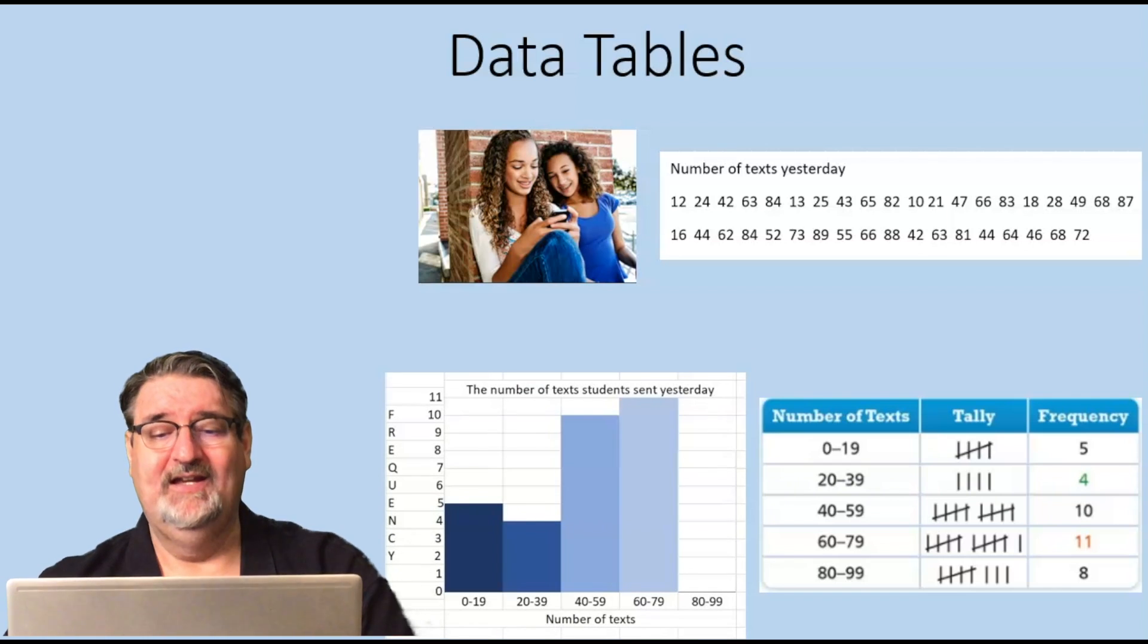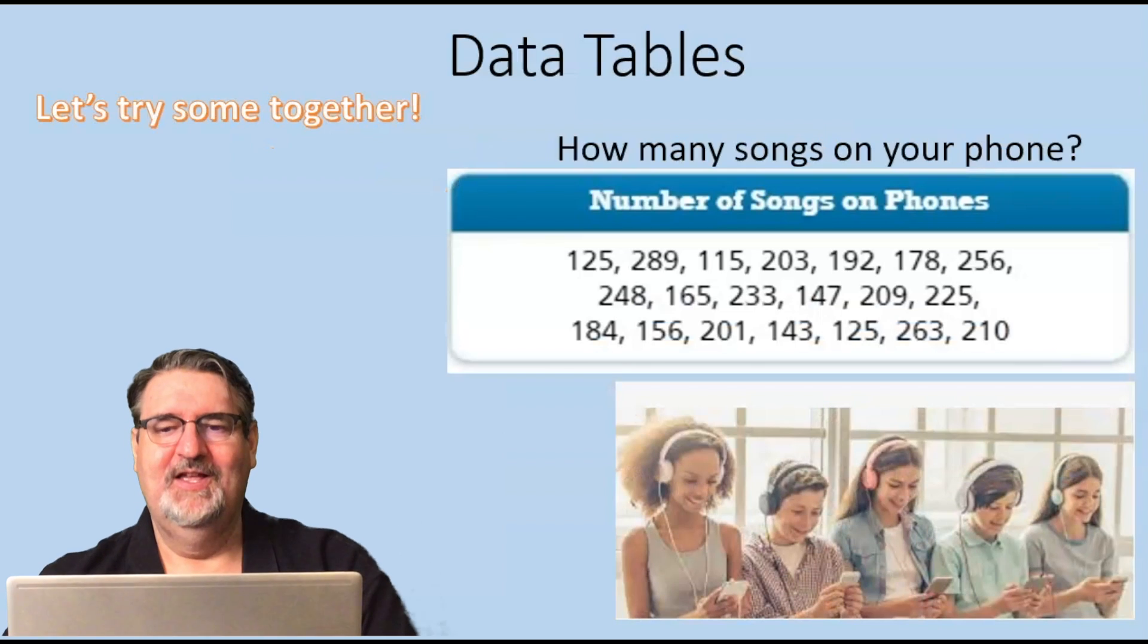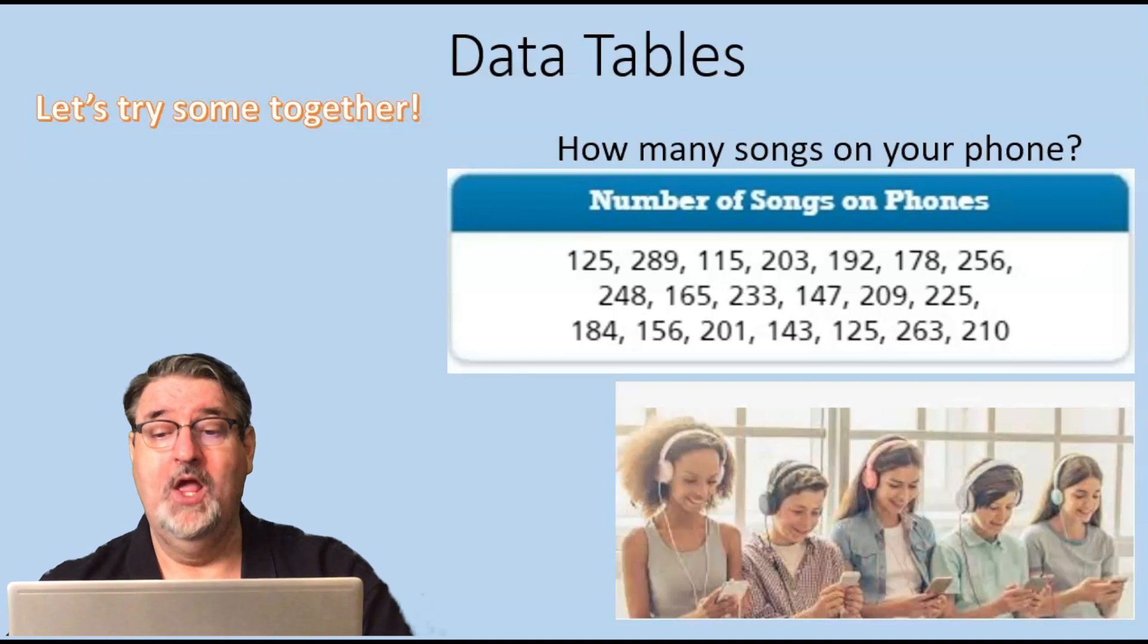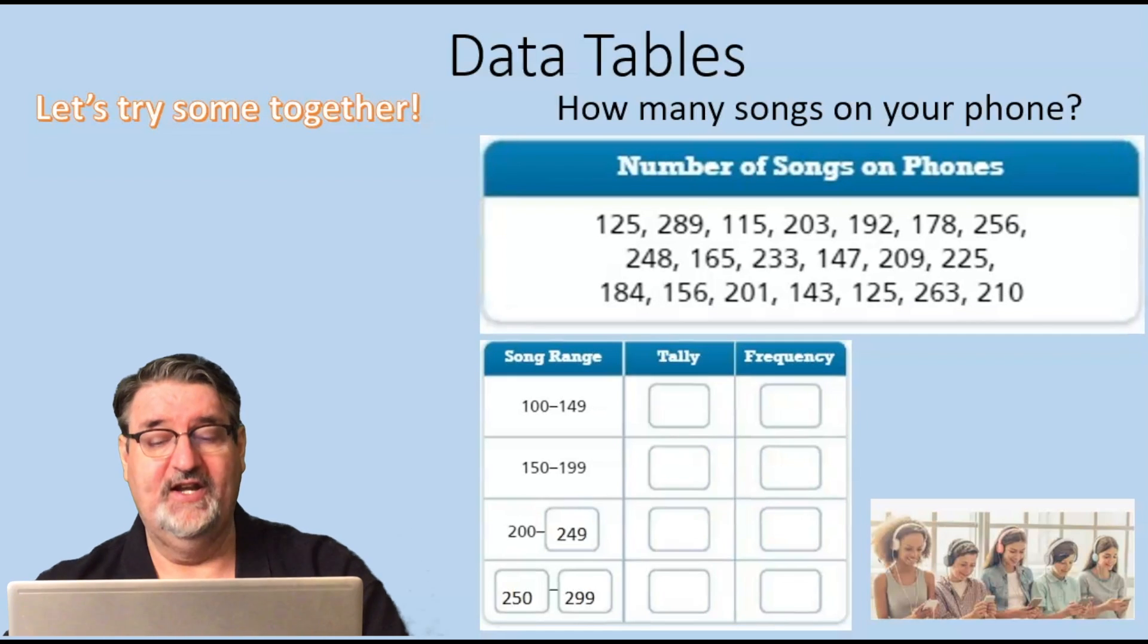From 20 to 39 there are four. From 40 to 59, there are 10. From 60 to 79 we can see that there are 11, and from 80 to 90 there are eight. Let's try this one together: how many songs are there on your phone? We have these numbers when we asked people in our class, and on the left side it says 100 to 149, 150 to 199. Now it starts off 200, what number would go next? We can see that the range is by 50s, so we're going to put 249, and in the bottom one it's from 250 to 299.